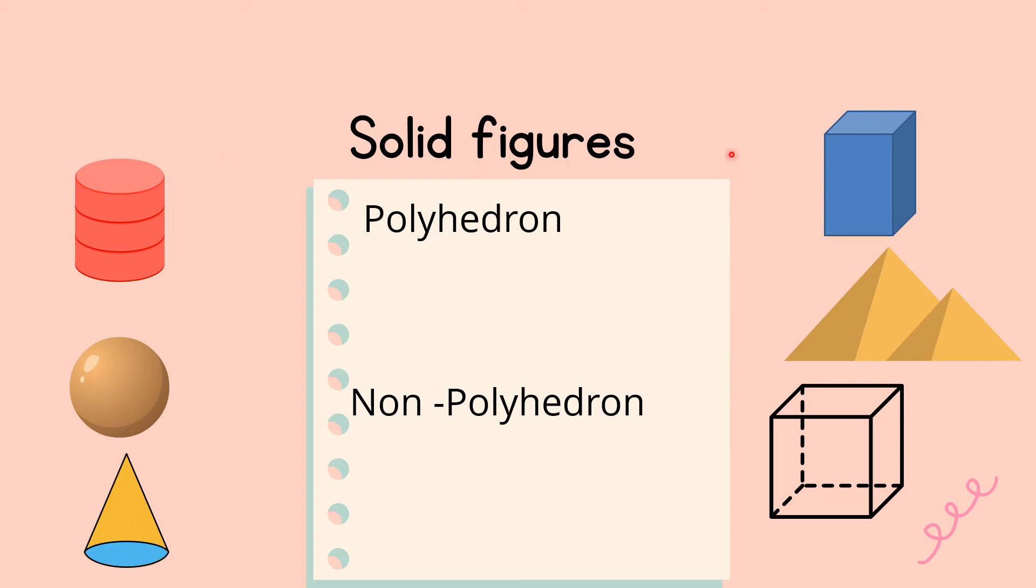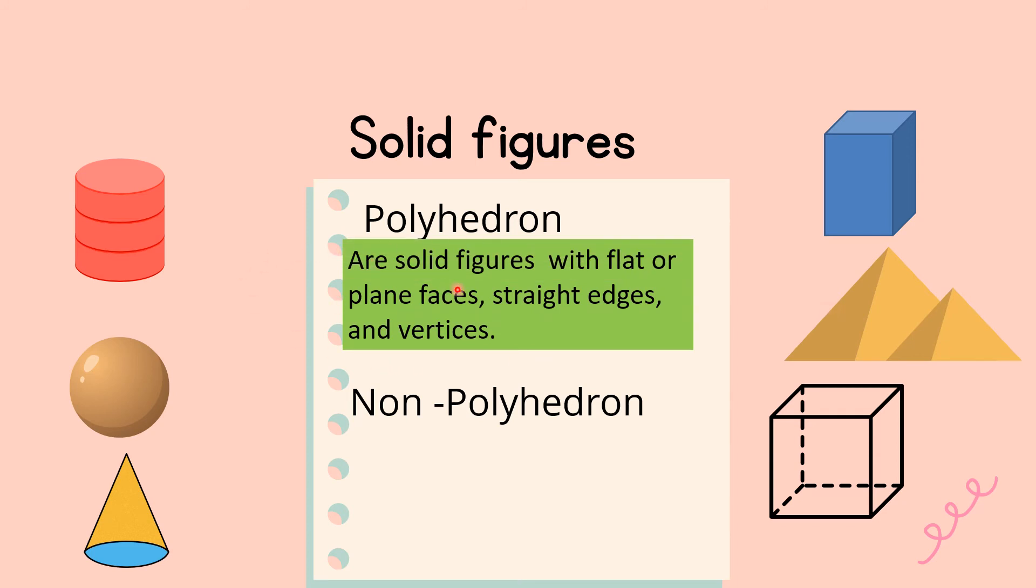Now, solid figures also are classified as polyhedron and non-polyhedron. So now, I am going to state the definition or give the meaning of polyhedron and non-polyhedron. Then, you are going to identify which set here, or which figures here are polyhedron or non-polyhedron. So here, polyhedron are solid figures with flat or plain faces, straight edges, and vertices.